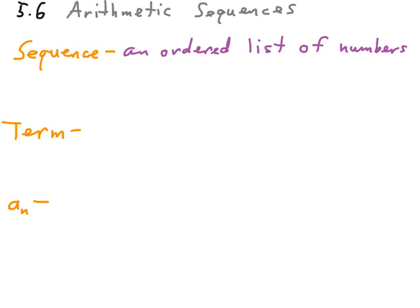Next is term, and a term is each number or item of a sequence. So if you're looking at the sequence of the whole natural numbers, 1, 2, 3, and 4, the first term is 1, the second term is 2, third term is 3, the fourth term is 4, and so on until you're finished.